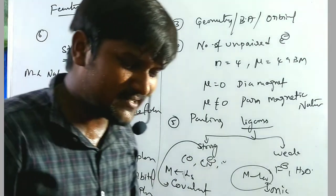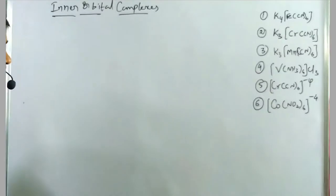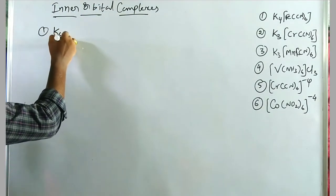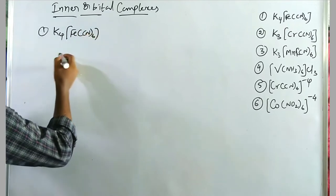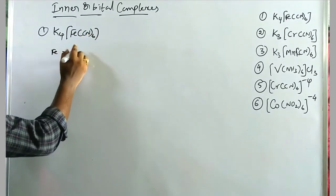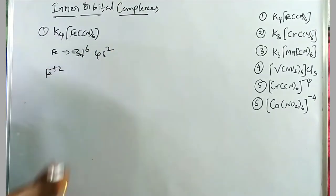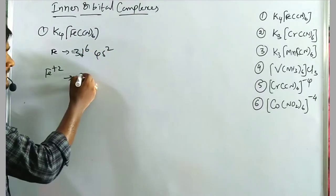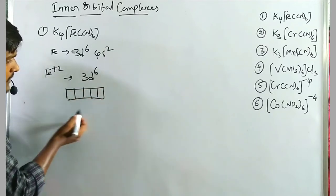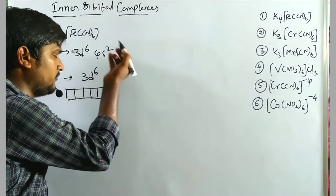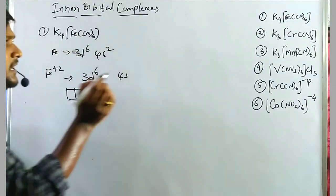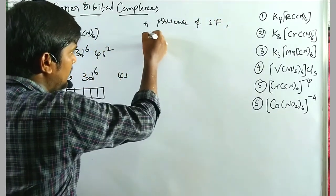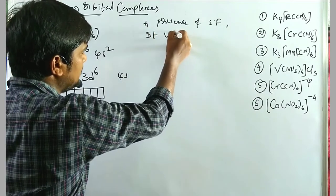Now let us discuss examples, starting with inner orbital complexes. First example: K₄[Fe(CN)₆]. Iron's configuration is 3d⁶4s². In the +2 oxidation state, two electrons are lost from 4s, giving 3d⁶. CN⁻ is a strong-field ligand, so Hund's rule is violated and pairing takes place completely. The six 3d electrons pair up into three orbitals.